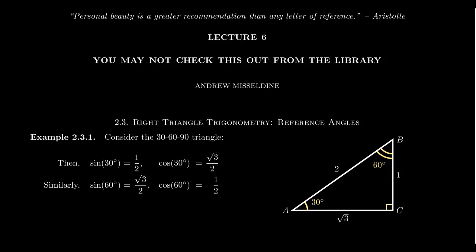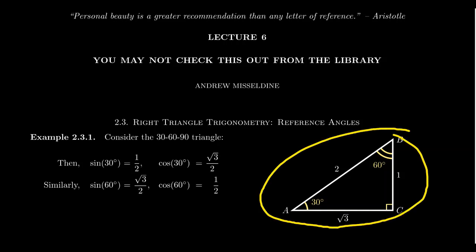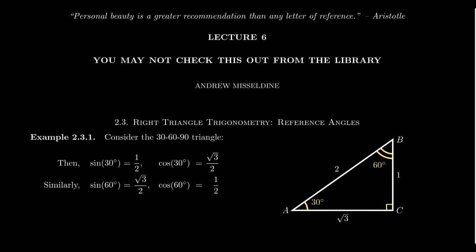When it comes to a 30-60-90 triangle, every 30-60-90 triangle is proportional to a standard one. The side opposite the 30-degree angle has a length of one, the side opposite the 60-degree angle has length square root of three, and the hypotenuse has a length of two. Every 30-60-90 triangle is proportional to this one, and so with this triangle we can talk about the various trigonometric ratios — for example, sine.